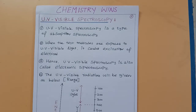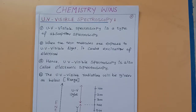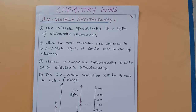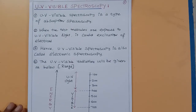Welcome to Chemistry Wins YouTube channel. UV-visible spectroscopy involves ultraviolet and visible radiation, also known as white light. It is a type of absorption spectroscopy — whenever UV-visible light is passed over an organic compound, it absorbs the radiation. We measure how much UV-visible light is absorbed by the organic molecule in order to identify it.